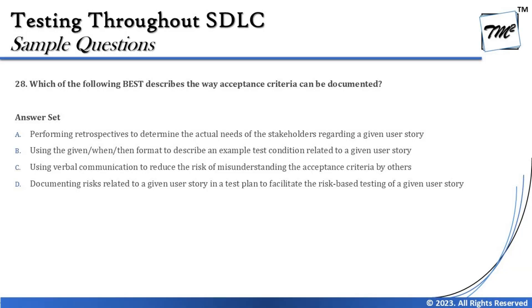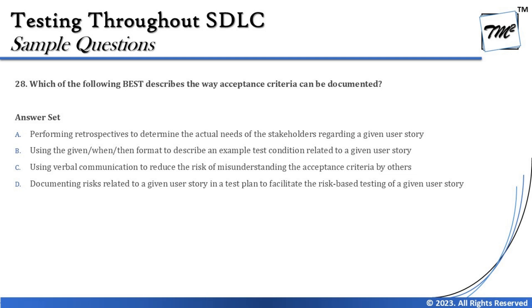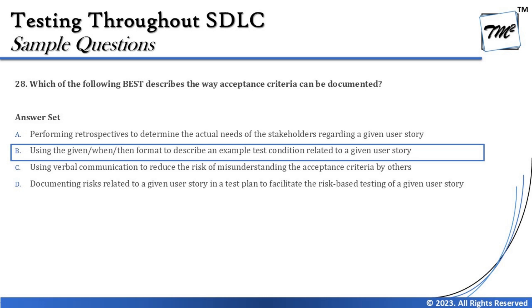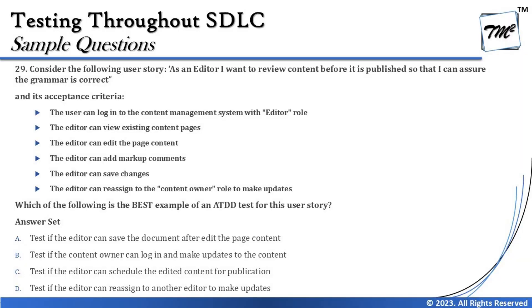Option C says using verbal communication to reduce the risk of misunderstanding acceptance criteria — this is the opposite of what we recommend, since verbal communication risks losing the message. Written communication is preferred to avoid data loss. Option D says documenting risks related to a given user story in a test plan to facilitate risk-based testing — this does not solve the purpose of documenting acceptance criteria. Therefore, the right answer is B: using the Given/When/Then format, which is the scenario-oriented approach for documenting acceptance criteria.